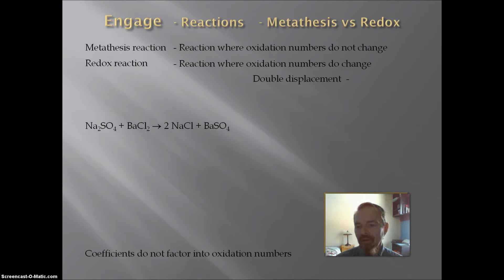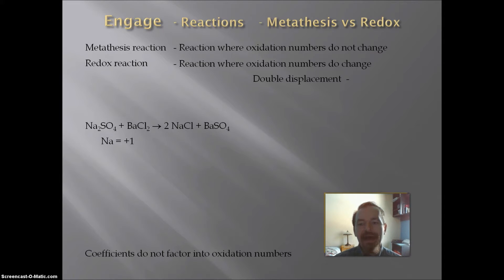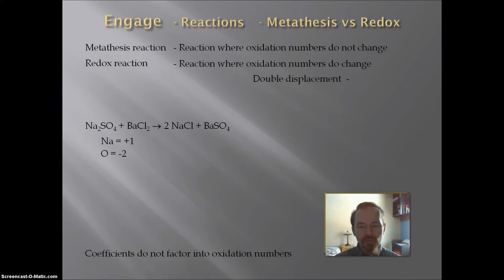In sodium sulfate, sodium is a monatomic ion with a charge of plus 1, and for monatomic ions the oxidation number equals the charge, so sodium is plus 1. Oxygen is in a compound, so its oxidation number is minus 2. The 2 sodiums give an overall charge of plus 2, and the 4 oxygens give minus 8. The compound is neutral, so sulfur must be plus 6.